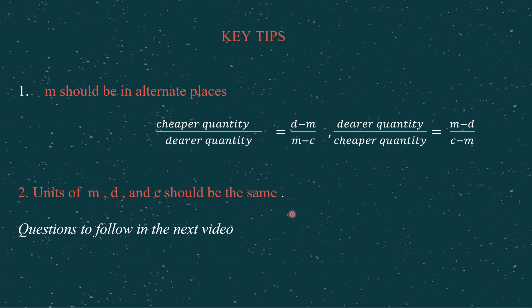The second important tip: the units of M, D, and C must all be the same. If you are using cost price, all three must be cost prices. If you are using sale price, all three must be sale prices. If you are using ratios, proportions, or percentages, all three values must be expressed in the same form. Always keep this in mind when applying the formula.